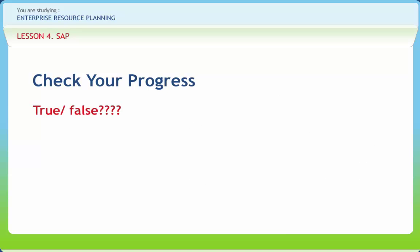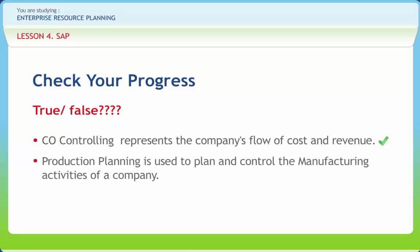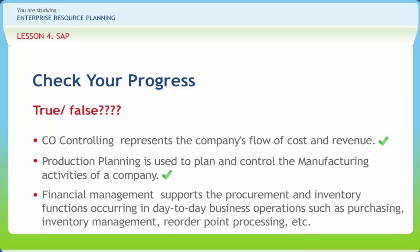We have understood the various concepts discussed in this lesson clearly. Controlling (CO) represents the company's flow of cost and revenue — right or wrong? Right. Production Planning is used to plan and control the manufacturing activities of a company — right or wrong? Right. Financial Management supports the procurement and inventory functions occurring in day-to-day business operations such as purchasing, inventory management, reorder point processing, etc. — right or wrong? Wrong.